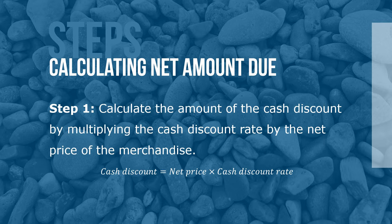Here are the steps to calculate the net amount due or cash discount of an invoice. Step 1: Calculate the amount of the cash discount by multiplying the cash discount rate by the net price of the merchandise. Cash discount = net price × cash discount rate.